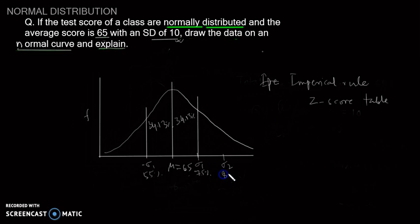The percentage of students between 65 and 85 is 47.73%. The portion between 75 and 85 is 13.59%.